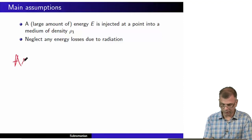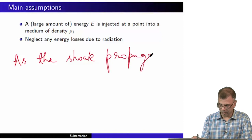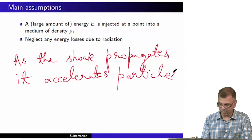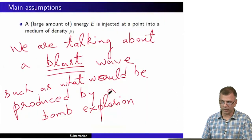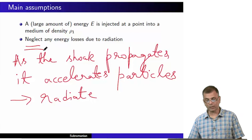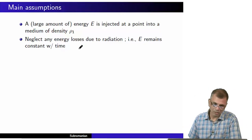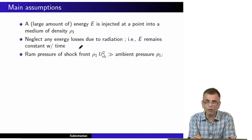The energy E that we talk about is conserved — E remains constant with time. This is called the adiabatic assumption, and it is good for supernova shock waves for a certain phase of evolution. We are concerned only with the adiabatic, or energy-conserving, phase of shock wave evolution.